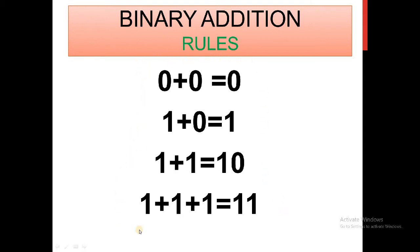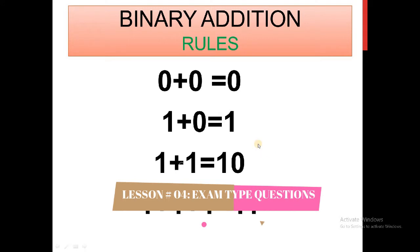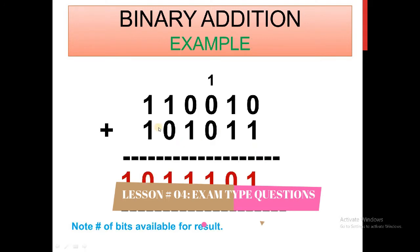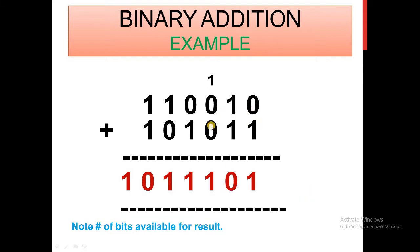Using these rules, let's see an example of how two binary numbers can be added. The first number is 110010 and the second is 101011 — these are 6-bit binary numbers. Starting from the right: 0 plus 1 is 1; 1 plus 1 is 10, so write 0 and carry 1; 1 plus 0 plus 0 is 1; 0 plus 1 is 1; 1 plus 0 is 1; and 1 plus 1 equals 10.